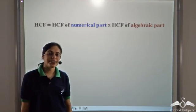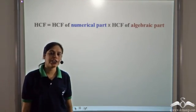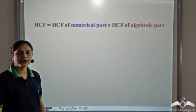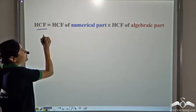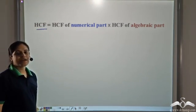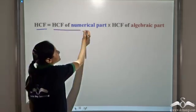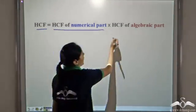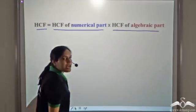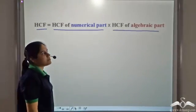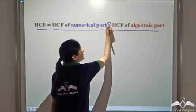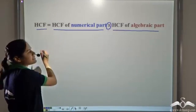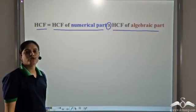You have learnt how to calculate the HCF of two or more terms. In order to calculate the HCF, you find the HCF of the numerical part of the terms and the HCF of the algebraic part of the terms, and then multiply them. That gives you the HCF of those terms.